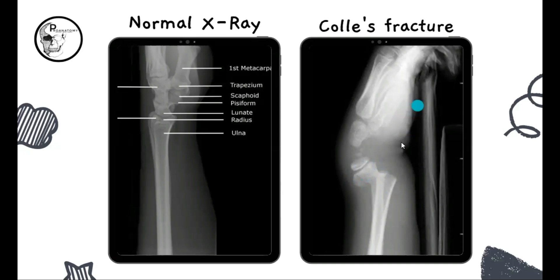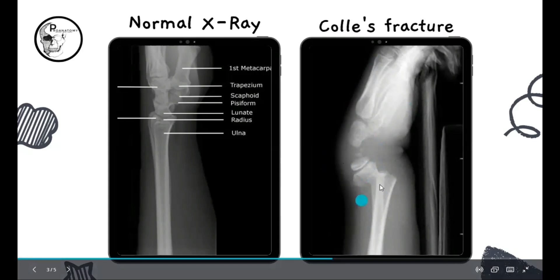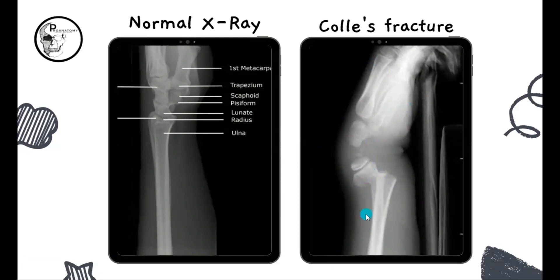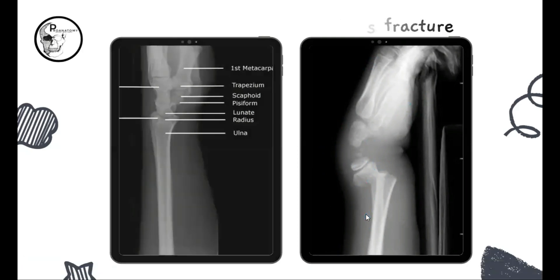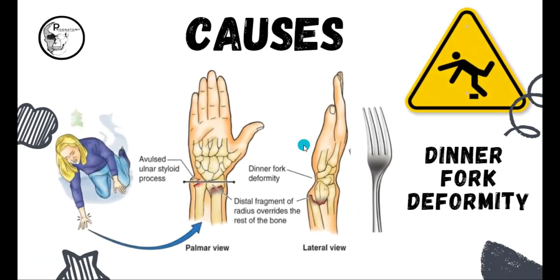Here the backward displacement of the fragment of the distal end fracture is termed as the Colles fracture. Here you can see the palmar aspect and this is the dorsum of the hand. And you can see the straight line of the soft tissue has changed into a curve here, and it almost aligns with that of a dinner fork, and hence it is called as a dinner fork deformity. So let's see what are the causes of the Colles fracture.